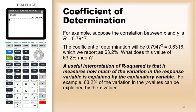Well, essentially, whatever x is, the variation in your x values, as you pick different x values, 63.2% of the variation in the y values in terms of how much the y values change can be explained by those x values.